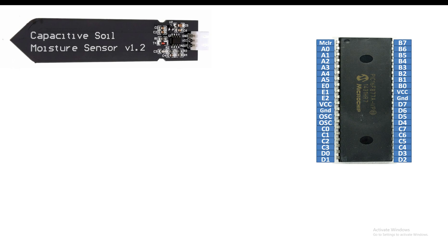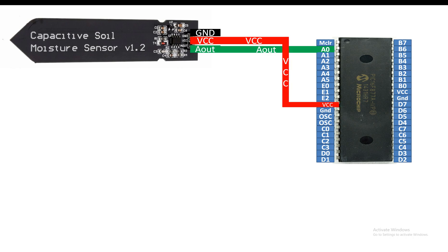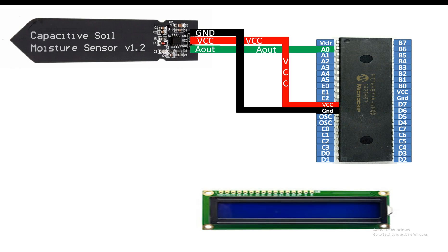The sensor has three pins, labeled on the board. The top one is Ground, then VCC, then AOUT - analog output. To read this pin we need the ADC pin of the PIC. The AOUT pin connects directly to any available ADC pin of the PIC; I'll use pin A0. VCC connects to the PIC's VCC, and Ground connects to the PIC's ground.